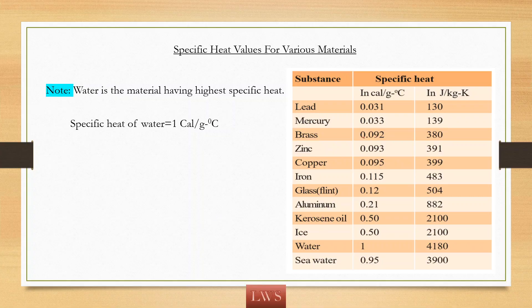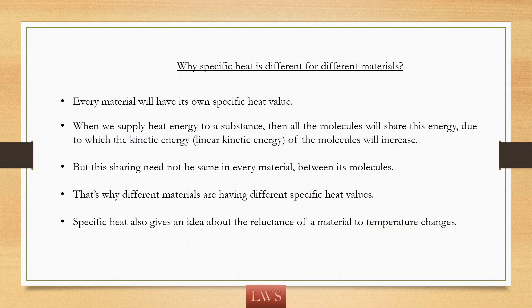In the last class, we discussed what is specific HEAT and we saw the specific HEAT values of different materials. Water is the material having the highest specific HEAT, with a value of 1 calorie per gram degree Celsius in the CGS system. Materials have their own specific HEAT value — it is not the same for all materials. But do you think why is it different for different materials? Let us discuss.